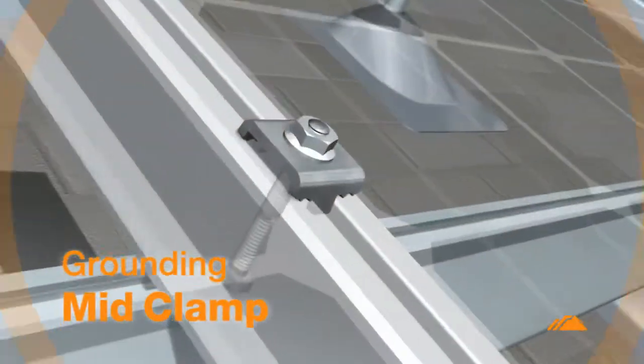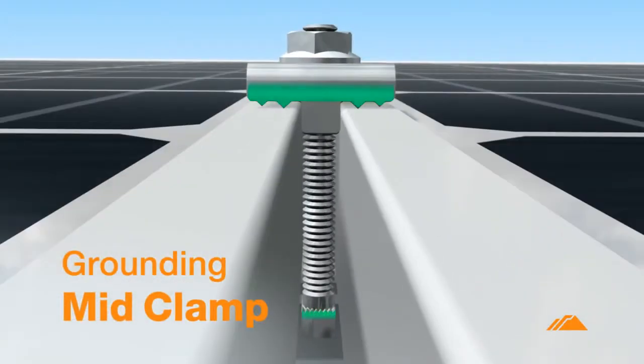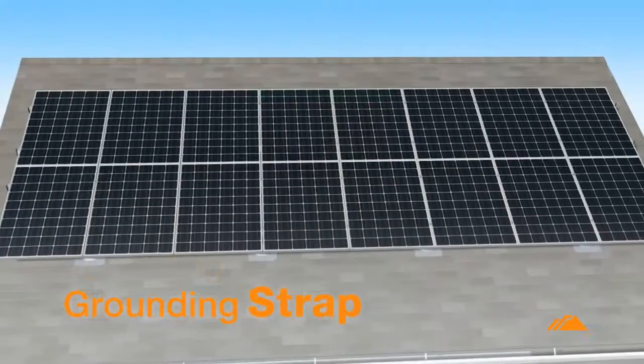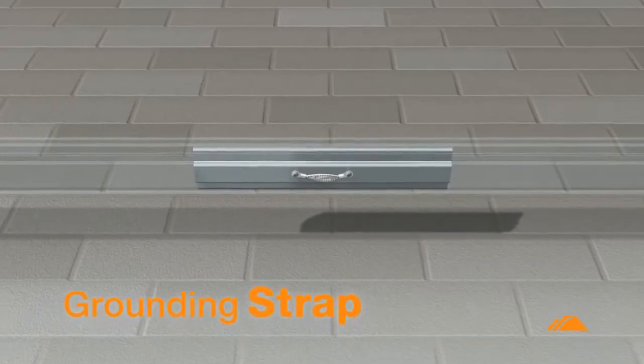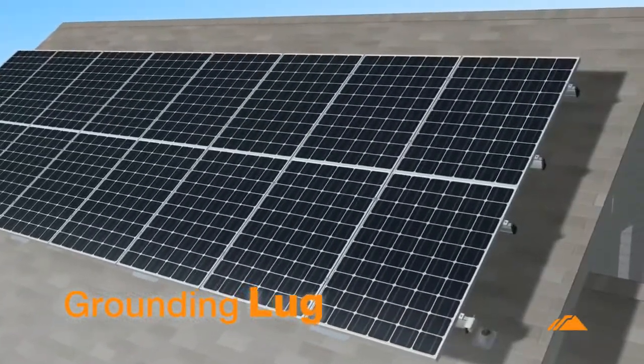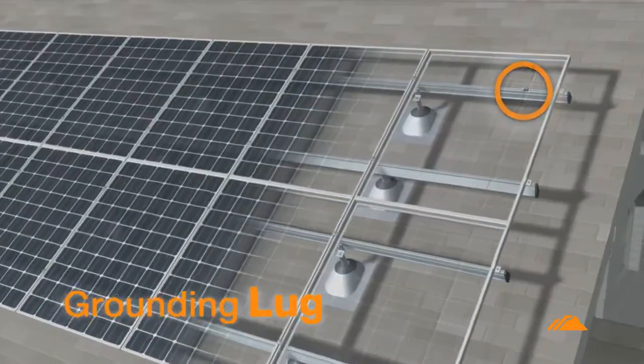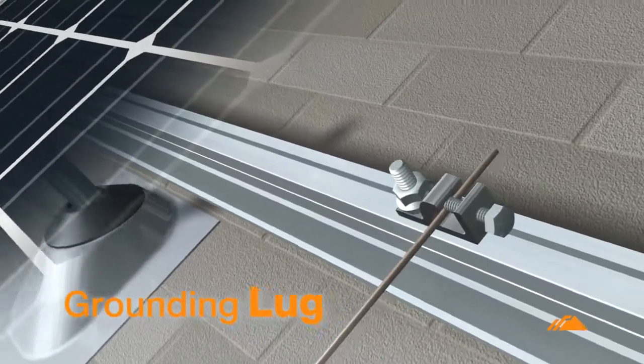The grounding mid-clamp uses teeth on both top and bottom to bond solar modules and rails into one continuous system. The grounding strap combines with a rail splice to structurally and electrically bond two segments of rail. And the grounding lug connects the entire row of modules to a grounding conductor.